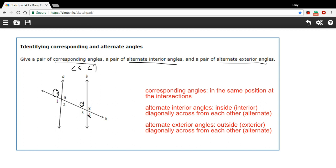So when we're trying to find alternate interior angles, we look at these inside angles and we pick any two angles that are diagonally across from each other. That's what alternate means, diagonally across from each other. So angle 2 and angle 7 would be alternate interior angles. So would 6 and 3.